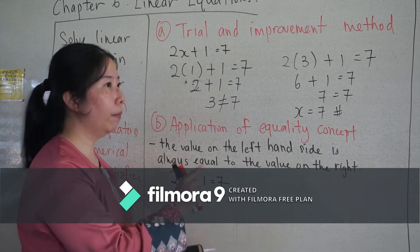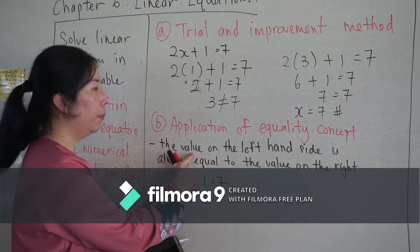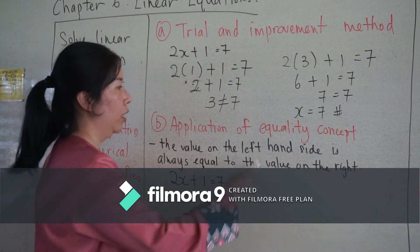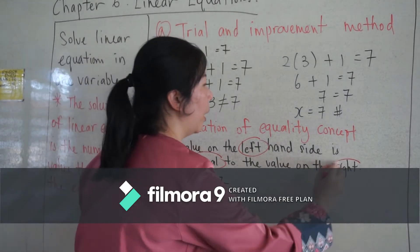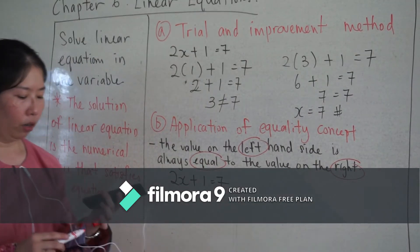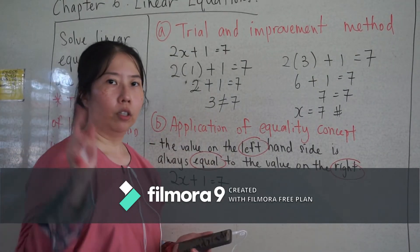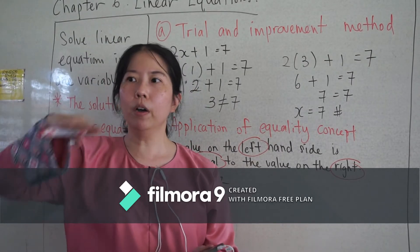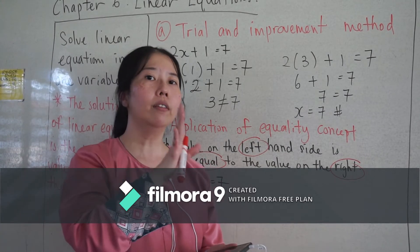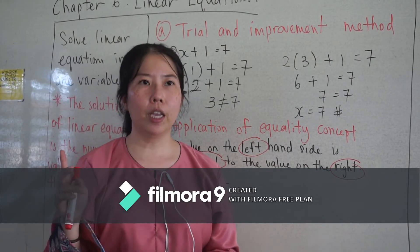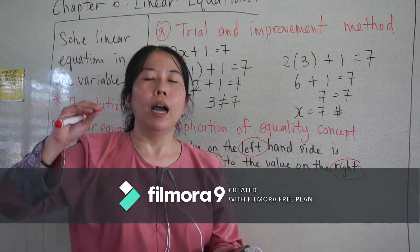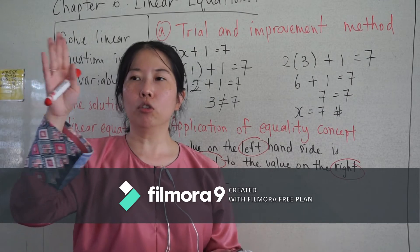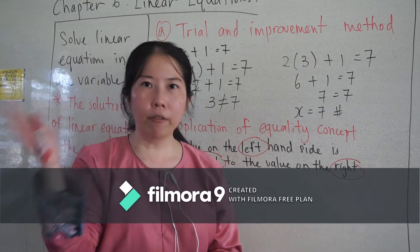The key note for the equality concept is that the numbers on the left-hand side must always equal the right-hand side. Just like the example — what number plus two equals five — the left-hand side must equal the right-hand side of five, so I add three to make both sides equal.